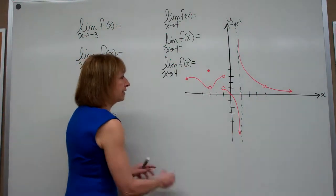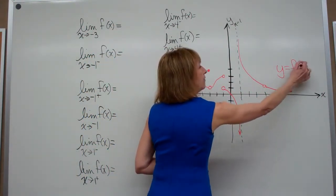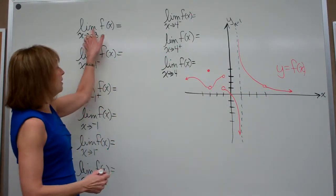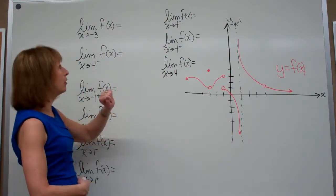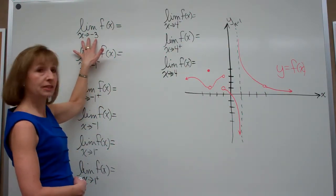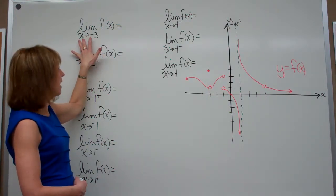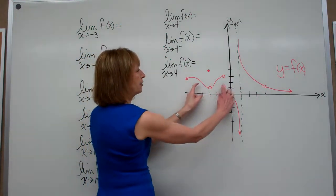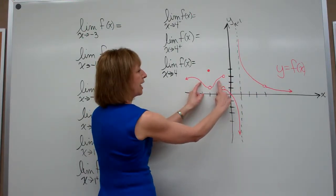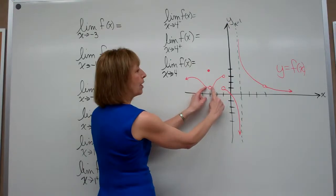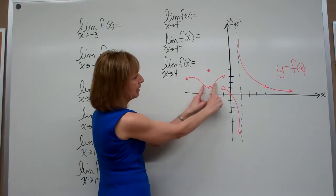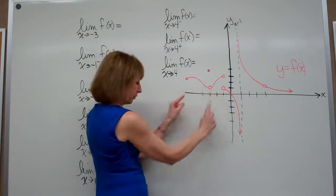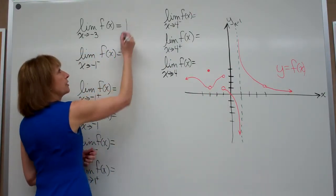Our graph is y = f(x), so the overall picture is your function. When we have the limit of the function values, I'll be looking for the function values as x gets infinitely close to negative 3. So I want to find on the x-axis: negative 1, negative 2, negative 3. The limit question says as I get infinitely close to an x value of negative 3 from both sides, my function values are approaching a value of 1. So the answer to this first limit question is 1.